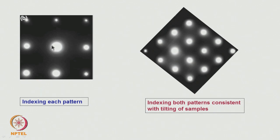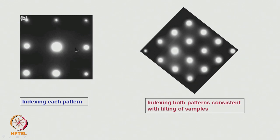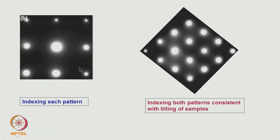We take these symmetric patterns along with the corresponding images, then tilt the sample to reach the two-beam condition so that only the central spot and one diffracted beam spot are present — that is how imaging for defect characterization is done, and that is covered in a separate class. In this class we want to know how a symmetric pattern, once taken, should be indexed.